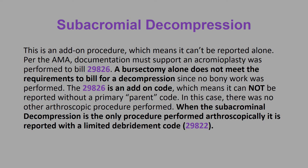Subacromial decompression. This is an add-on procedure, which means it can't be reported alone and it is exempt from a 51 modifier. Per the AMA, documentation must support that an acromioplasty was performed to bill 29826. A bursectomy alone does not meet the requirements to bill for a decompression since no bony work was performed. The 29826 is an add-on code which means it cannot be reported without a primary parent code. When the subacromial decompression is the only procedure performed arthroscopically, it is reported with a limited debridement code 29822.